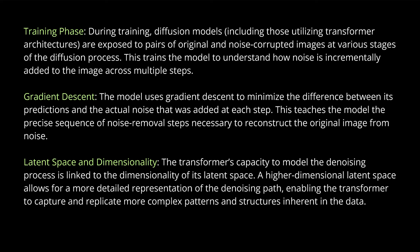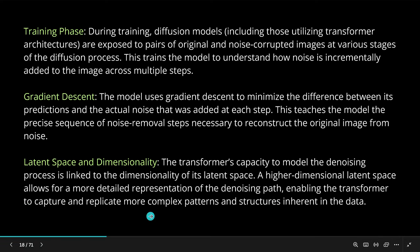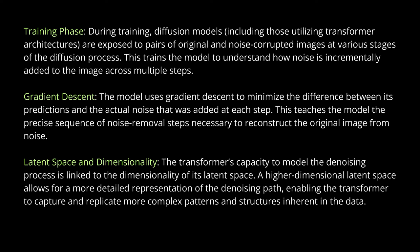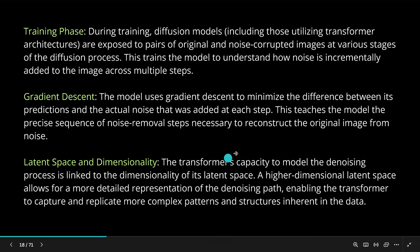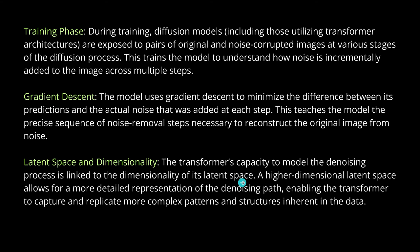It is the classical transformer learning process. The mathematical space we build the noise into is critical — we call it the latent space, and it has high dimensionality. The transformer's capacity to model the denoising process is linked to the dimensionality of its latent space. A higher-dimensional latent space allows for a more detailed representation of the denoising path, enabling the transformer architecture to capture and replicate more complex visual patterns inherent in the image data. However, there is also a problem on a computational level that we will discuss.